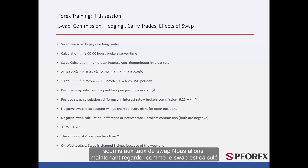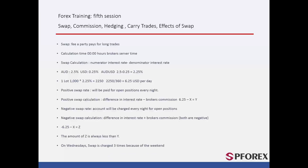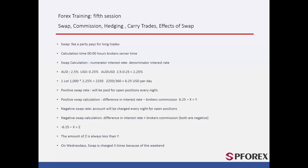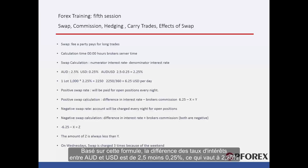Trades that have been open before midnight and held open past this time will be subject to swap rates. For example, in Australian against US dollars: the Australian dollar interest rate at this moment is 2.5%, minus the United States dollar interest rate which is 0.25%. The difference is 2.5 minus 0.25%, which equals 2.25%.